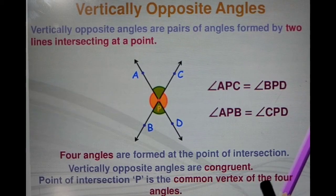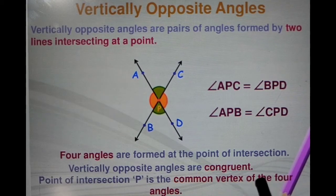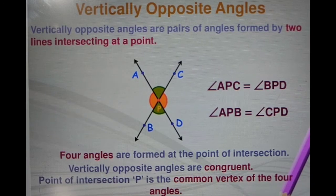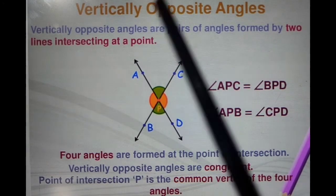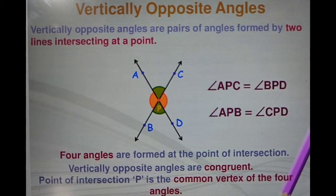Vertically opposite angles are congruent, meaning equal. The point of intersection P is the common vertex of the four angles. Vertically opposite angles — this is a very important point to be noted.